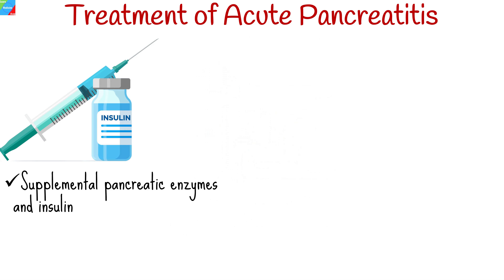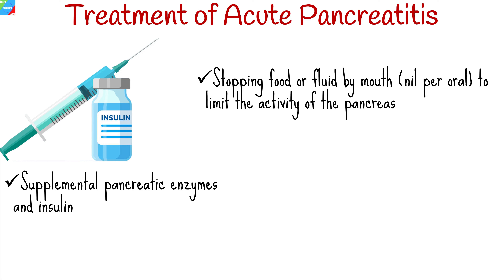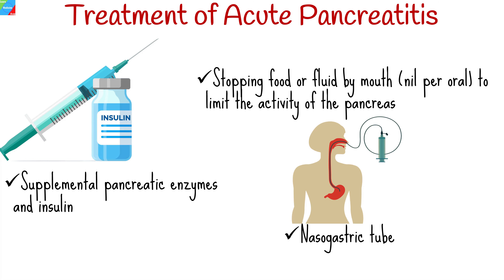If your pancreas isn't working properly, you may need supplemental pancreatic enzymes and insulin. Stopping food or fluid by mouth helps limit the activity of the pancreas. A nasogastric tube may also be passed into the stomach to feed you, as you will not be able to eat properly.